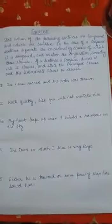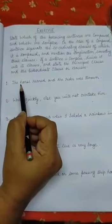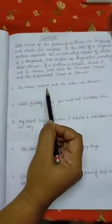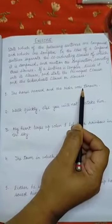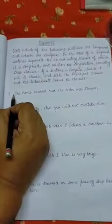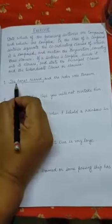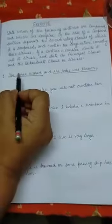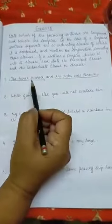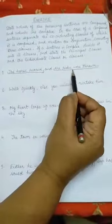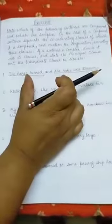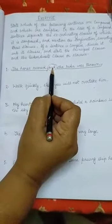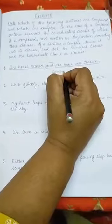The first sentence is: 'The horse reared and the rider was thrown.' This is a compound sentence because we have two clauses — 'the horse reared' and 'the rider was thrown' — and both are principal clauses, each complete in its meaning. They are two independent clauses connected by the conjunction 'and,' so this is a compound sentence.